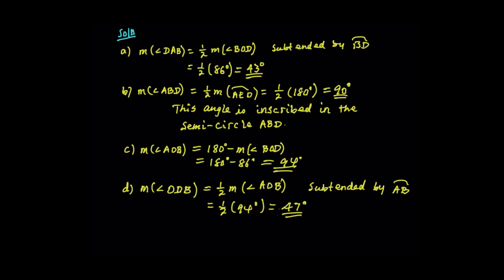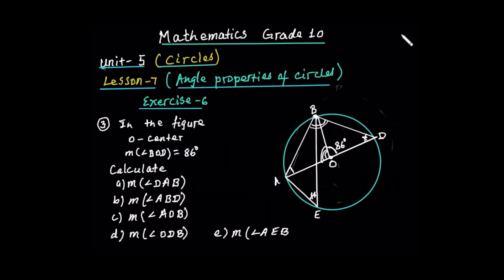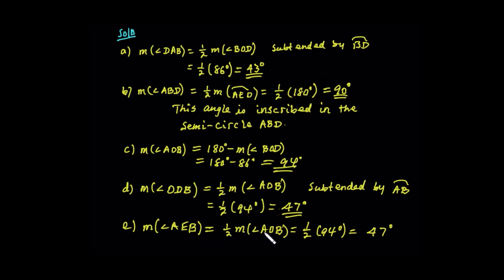Now, we are asked for the measure of angle AEV. It is subtended by arc AB. The central angle is 94 degrees, subtending that arc. Or simply, the measure of angle AEB is half the measure of the central angle AOB, because they are subtended by the same arc. This becomes half of 94 degrees, and half of 94 is 47 degrees. Because these two are subtended by arc AB, it is equal to 47 degrees.